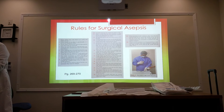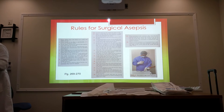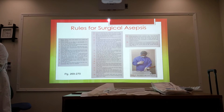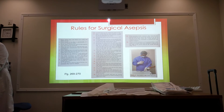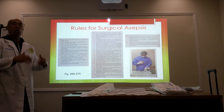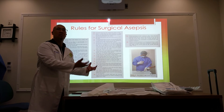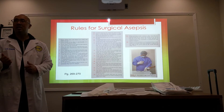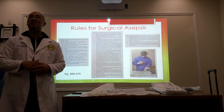Number eight: a contaminated area on a sterile field must be covered by a folded sterile towel or drape of double thickness. Number nine: if a sterile person's gown or gloves become contaminated, they must be changed. Number ten: a sterile field must be created just prior to use. Once prepared, it must not be left unattended, as it may become contaminated.